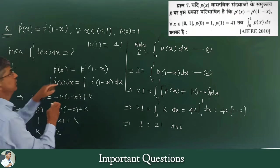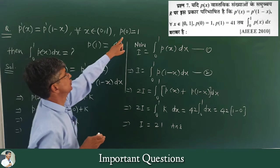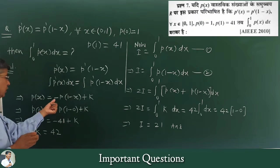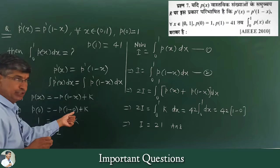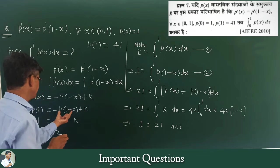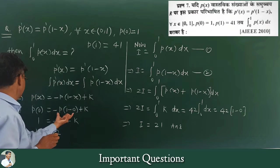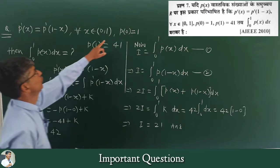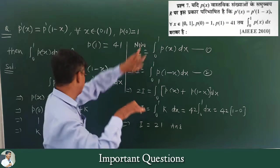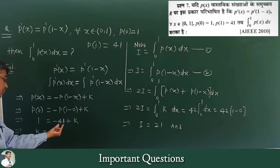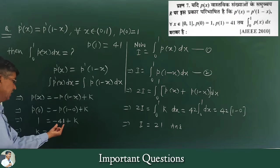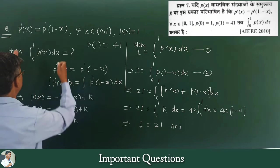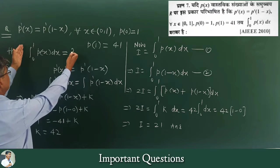So p(x) is equal to minus p(1-x) plus constant k. We have p(1-x) = -p(x) + k. The k value comes out to be 42, since p(0)=1 and p(1)=41, and p(0) + p(1) = 42.